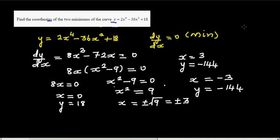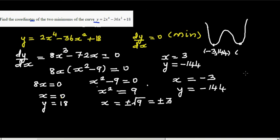So I can draw the sketch of the graph. The sketch would look somewhat like this, not drawn to scale. So basically this point is minus 3 comma minus 144, this point is 3 comma minus 144, and this point is 0 comma 18.